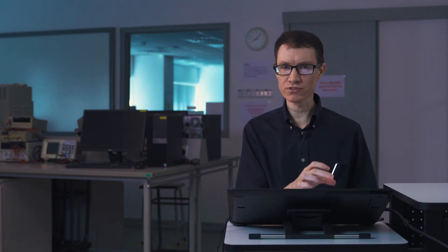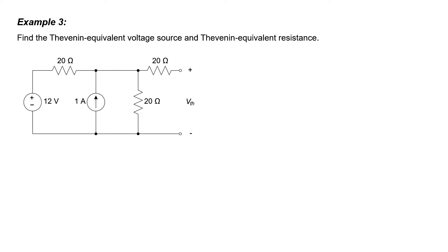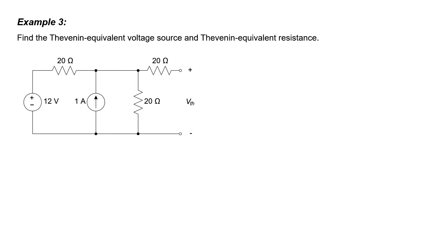In the next problem, we have two different sources and three resistors, but the power of using the Thevenin equivalent is that we can combine all of the resistors and sources into just one source and one resistor. Let's use the node voltage analysis method to find the Thevenin equivalent voltage. Since no current flows through the 20 ohm resistor during the voltage measurement, I can label this node as VTH.